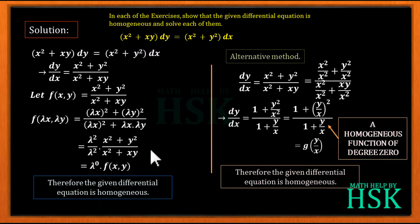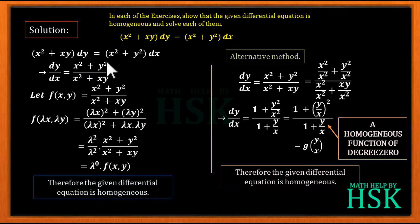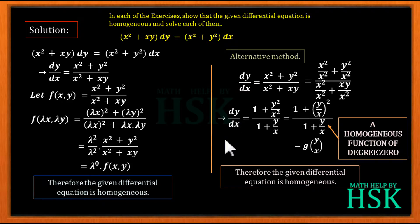Since this was the first problem, we took time to demonstrate both methods. To summarize: to prove a given equation is a homogeneous differential equation, you can use two methods. In both, you write dy/dx as a function. Method 1: show f(λx, λy) = λ⁰ · f(x, y). Method 2: show dy/dx = g(y/x), since y/x has net degree 0 in variables, confirming it is a homogeneous function of degree 0.